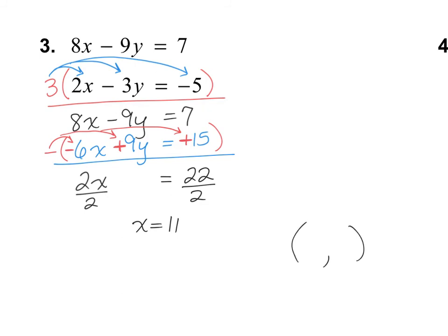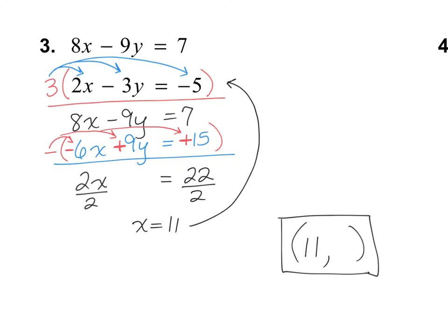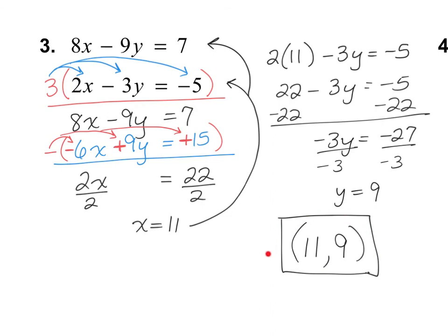I'll substitute x equals 11 into the bottom equation: 2 times (11) minus 3y equals negative 5. Go ahead and finish this problem on your own — solve for y and write your answer as an ordered pair. My answer was 11, comma 9. That means if I were to graph these two lines, they would intersect at 11, comma 9.